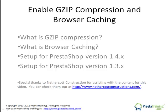Version 1.4 makes it really easy because you can just click a setting and it will automatically handle gzip compression and browser caching. But 1.3 does not have that option available to it, so what I'm going to show you is how to do it manually — how to copy and paste some information from the 1.4 setup and apply that to the 1.3 shop that you've got set up.